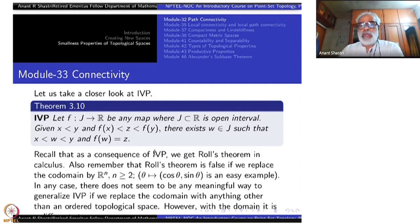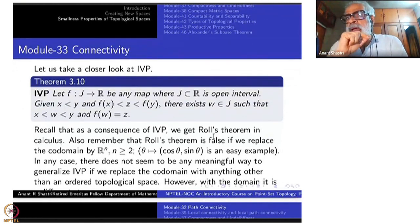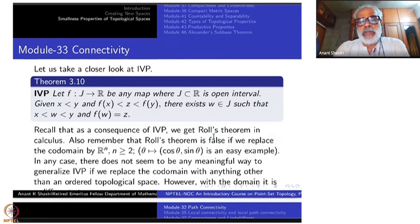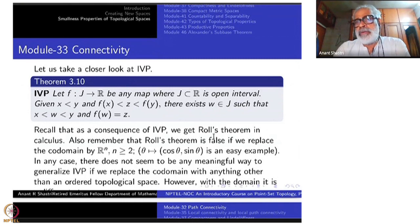As a consequence of the Intermediate Value Theorem, you must recall, we get Rolle's Theorem in calculus about functions which are differentiable on the open interval. Also, remember that Rolle's Theorem is false if we replace the codomain by R^n where n is greater than or equal to 2. The simplest example is theta mapping to (cos theta, sin theta), which is differentiable everywhere. The derivative is never zero, but two points may have the same endpoints. So this is an easy example where you don't get Rolle's Theorem.